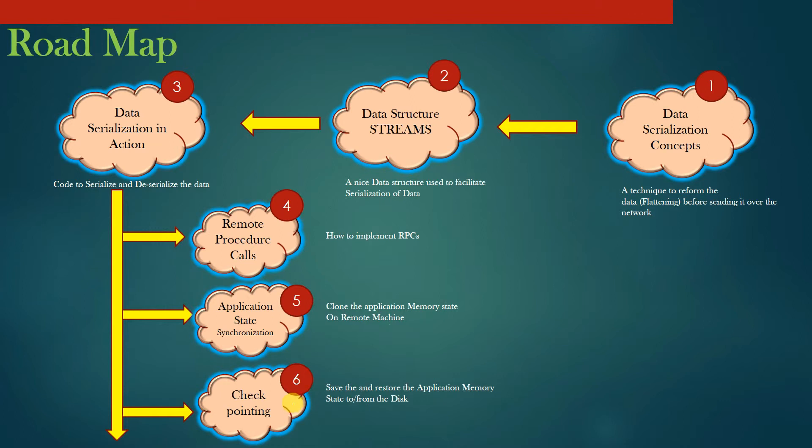Finally, we have Module 6, which is called checkpointing. In this module, you will learn how to save and restore the application memory state to and from the persistent disk.